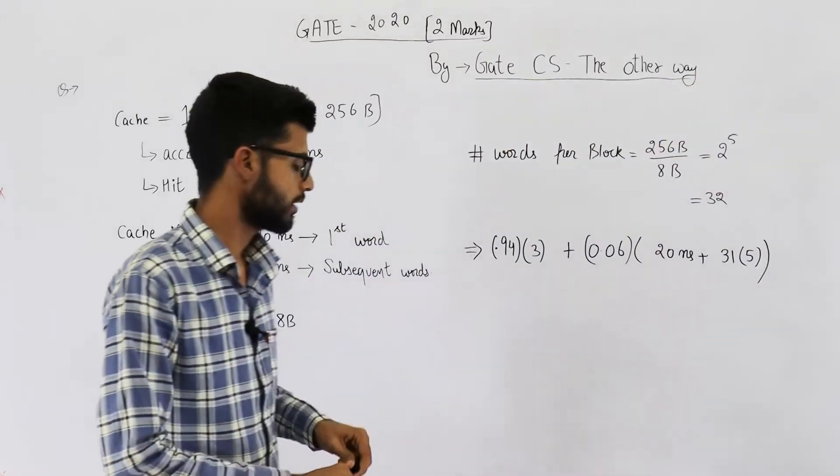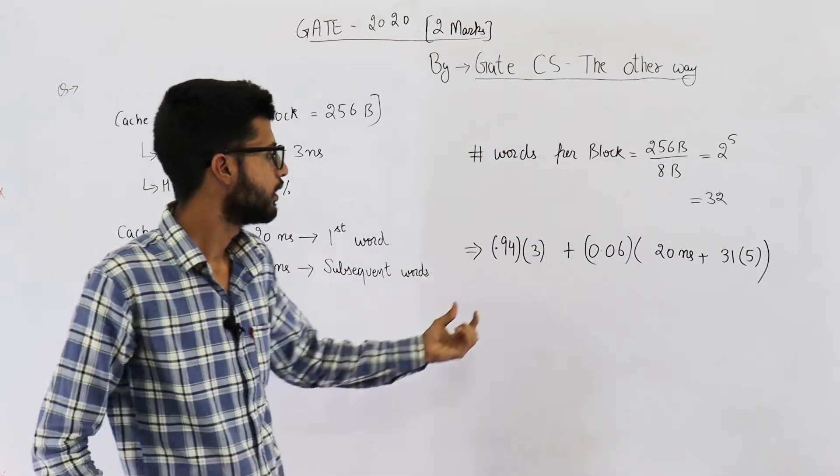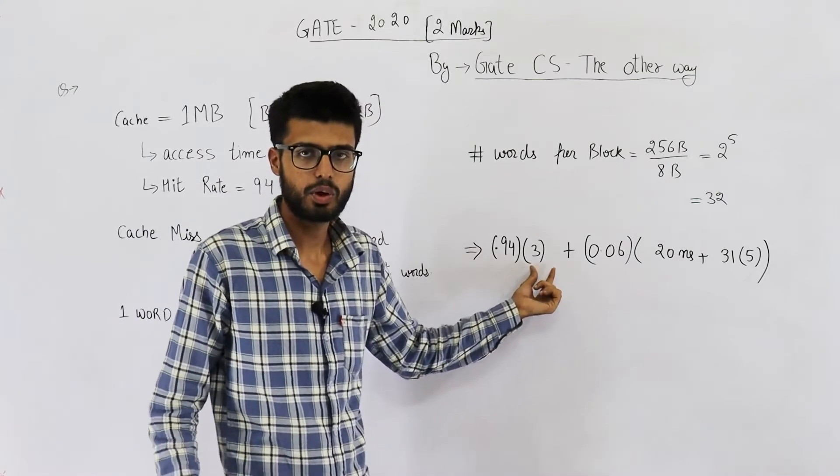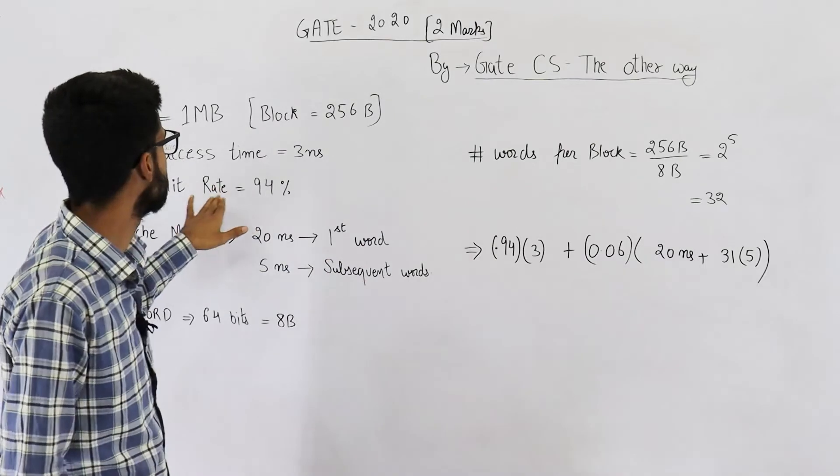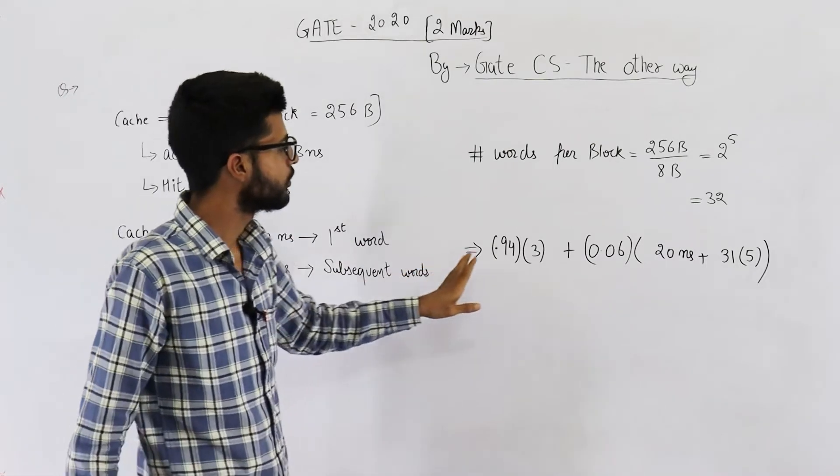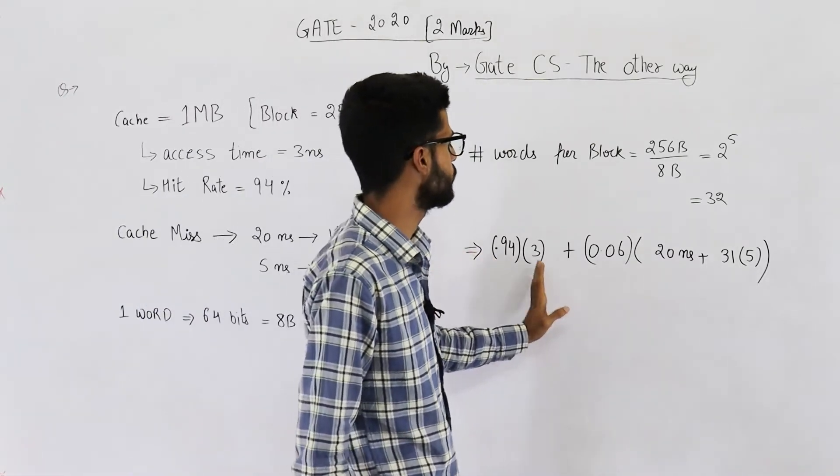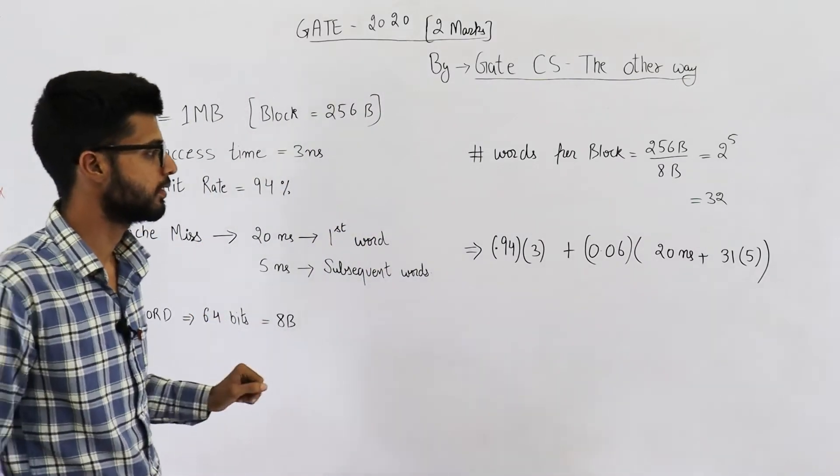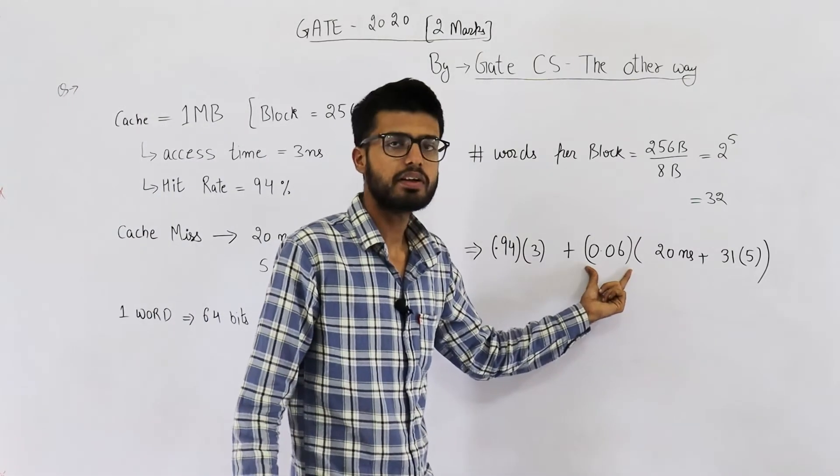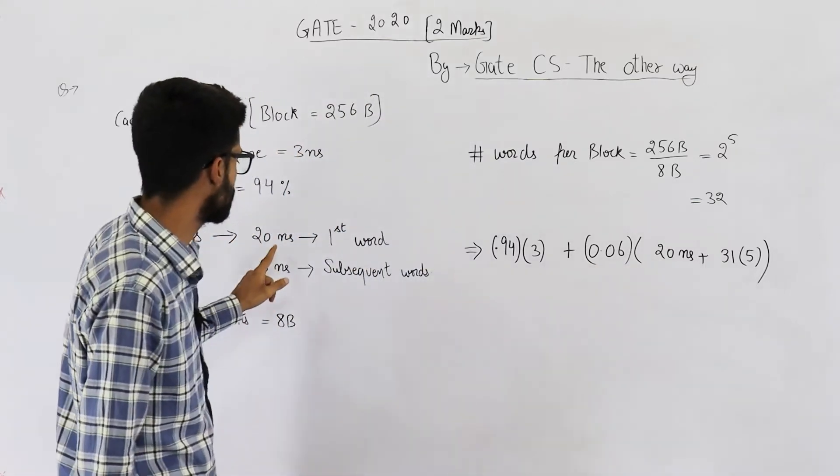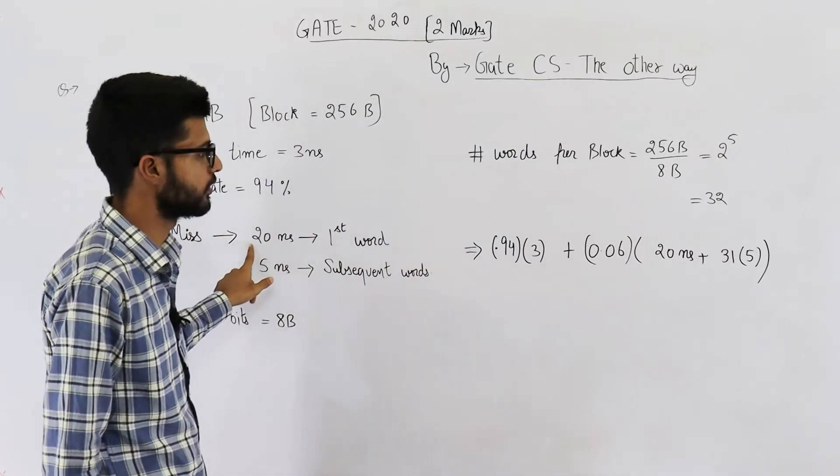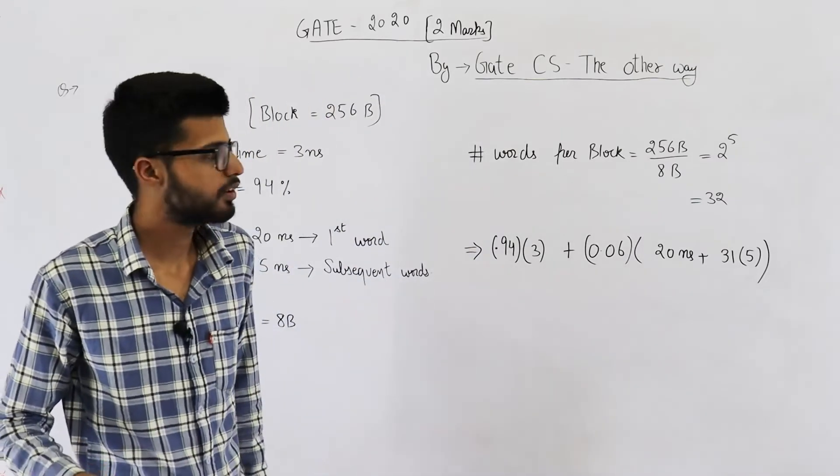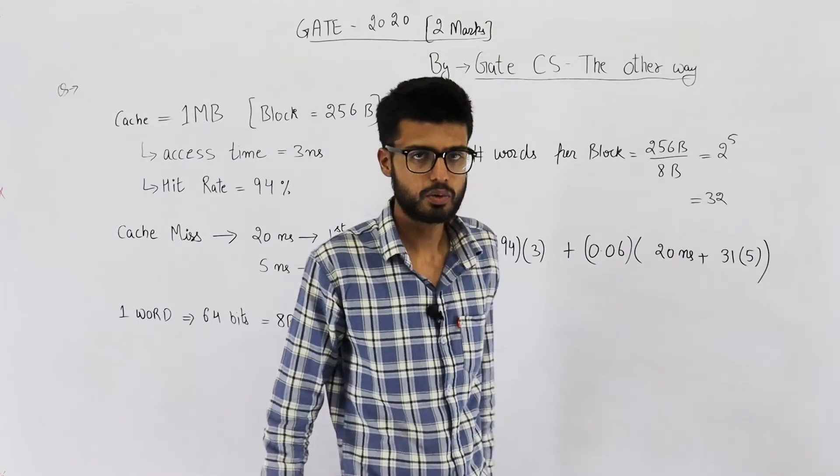So what is happening? 94 percent of the times, 3 nanoseconds are required whenever there is a hit. That means 0.94 into 3 nanoseconds. And remaining 6 percent of the times, whenever there is a miss, first word requires 20 nanoseconds, and remaining 31 words - because in total we have 32 words - remaining 31 words require 5 nanoseconds each.